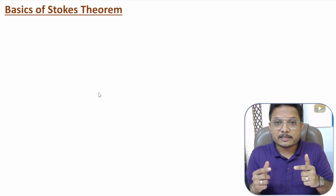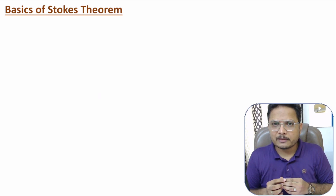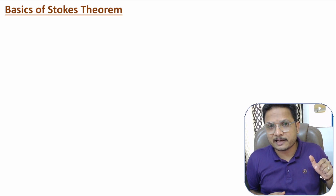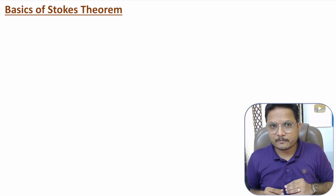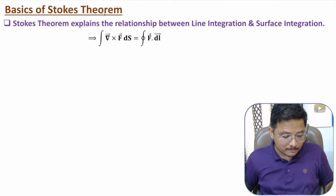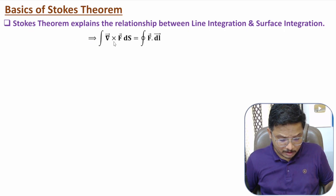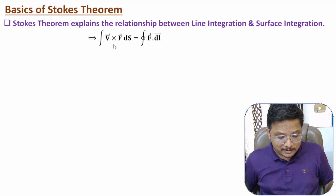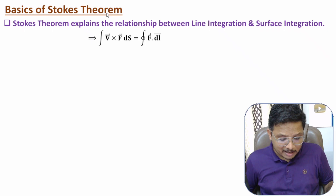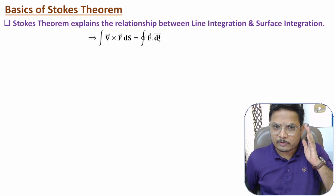One should know Stokes Theorem is based on curl of a function. In my earlier videos of this video lecture series of Electromagnetics Theory, I have explained curl of a function. If you observe the Stokes Theorem statement, it gives the relationship between line integration and surface integration. If you have function f, then del cross f is the curl of that function. Curl of function surface integration equals the function's line integration. In this video, I'll derive this statement as well.